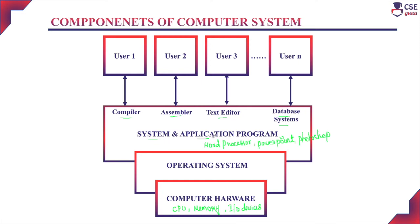Without system programs, application programs cannot run independently. System programs run independently in kernel mode, which is the operating system mode. Whenever the user wants to run any application program, an interface is provided by the operating system. System programs run in the background and are not shown to the user, while application programs run in the foreground to satisfy user requirements.